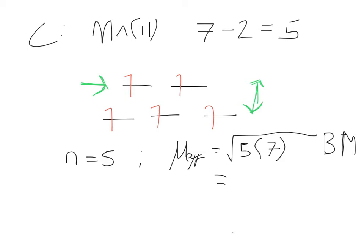Let's do it. Square root of 35. 5.91. I'm looking at that third decimal point. I'm rounding up to 5.92. 5.92 Bohr magnetons. That's a lot of Bohr magnetons.